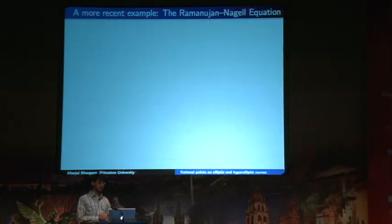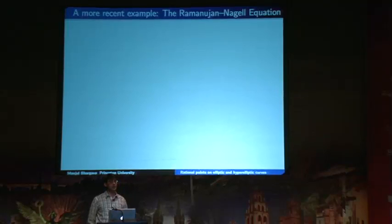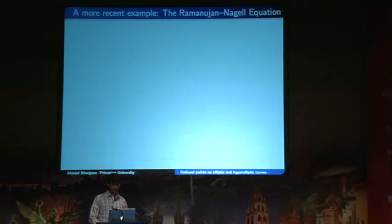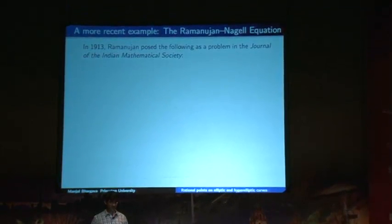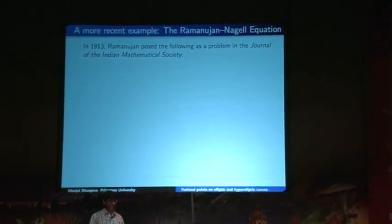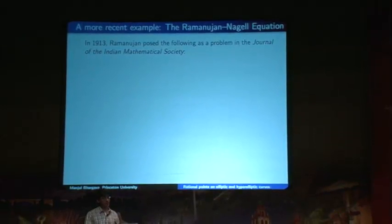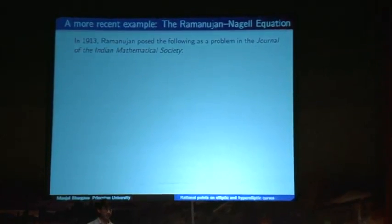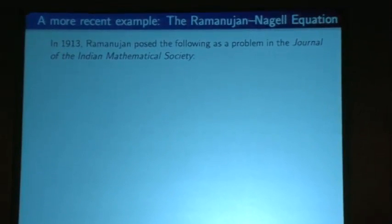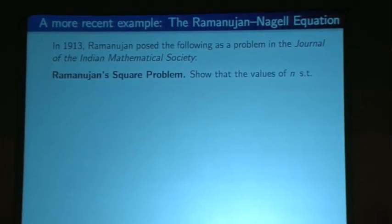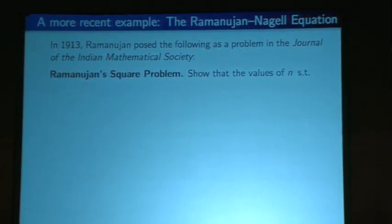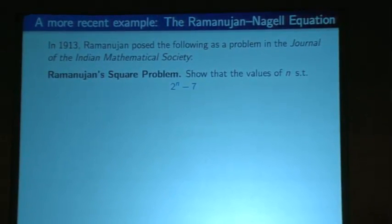Here's a more recent example, just from the last century, of an attempt to understand when a mathematical expression takes a square value. In 1913, Ramanujan posed the following as a problem in the Journal of the Indian Mathematical Society. This is called Ramanujan's square problem: he wanted to know what are the values of n such that 2ⁿ − 7 is a square.